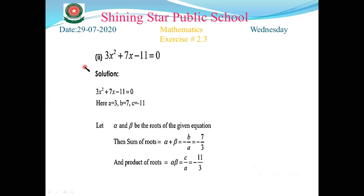Part number two: 3x² + 7x - 11 = 0. Comparing with the standard form of the quadratic equation, we get a = 3, b = 7, c = -11. Let alpha and beta be the roots. Sum of roots: alpha + beta = -b/a. Here b is 7 and a is 3, so the sum of roots is -7/3.